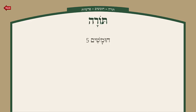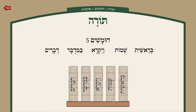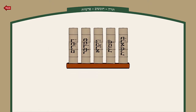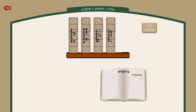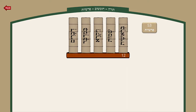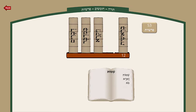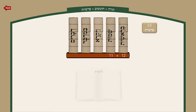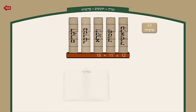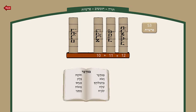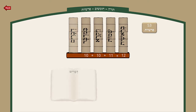So we can see that there is one Torah, five Chumashim: Bereishis, Shemos, Vayikra, Bamidbar, and Devarim. Each of these Chumashim contains its Parshiyos, and we see that there are 53 Parshiyos in total.